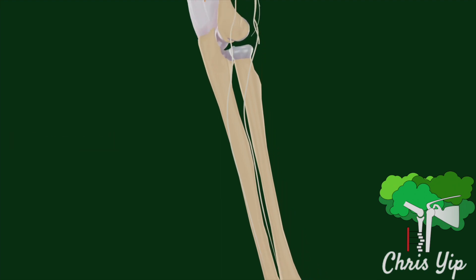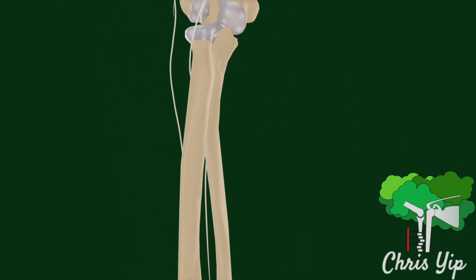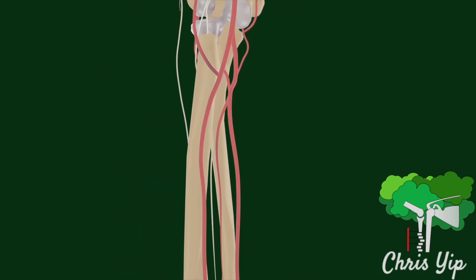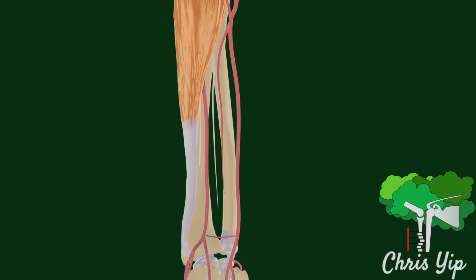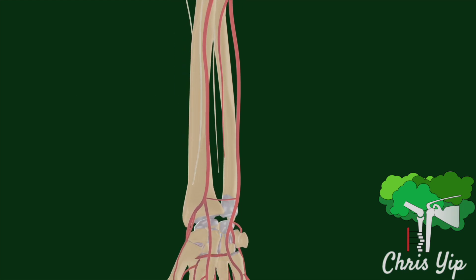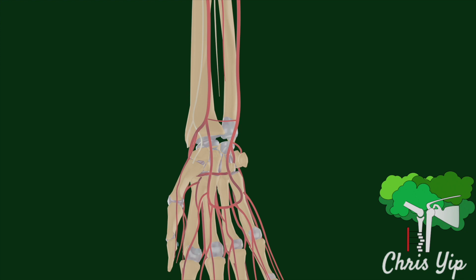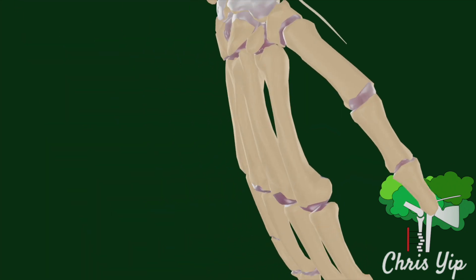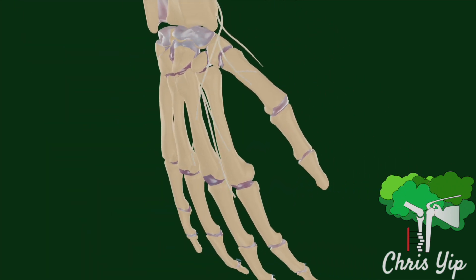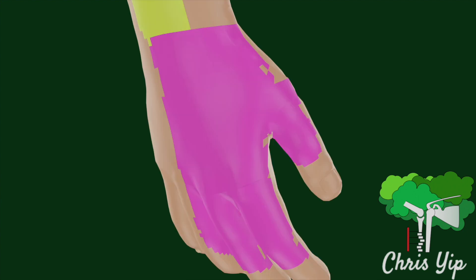Meanwhile, the superficial radial branch continues to descend anterolaterally in the forearm, lateral to the radial artery, and deep to the brachioradialis. This is until it deviates laterally at around 7cm proximal to the wrist and runs over the anatomical snuffbox to supply the dorsum of the hand, specifically the radial part of the dorsum of the hand as well as the radial 3.5 digits up to the proximal interphalangeal joints.